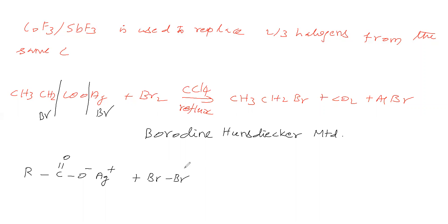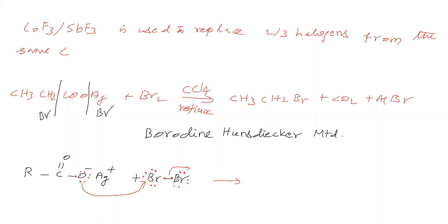Bromine comes under the seventh A group, so its valence shell has seven electrons. Oxygen is in the sixth A group, having six electrons plus one more due to the negative charge. This oxygen donates a lone pair to Bromine while Bromine contributes a vacant orbital, so a bond forms between oxygen and Bromine.